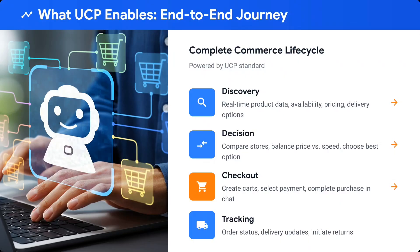What is the end-to-end journey for UCP? First is discovery — real-time product data, availability, pricing, and delivery options. Using UCP, the agent can see and compare different prices. Then checkout: add item to cart, select payment methods, complete payment. Tracking is also included — order status, delivery options, etc. It is a complete end-to-end e-commerce journey that UCP covers.